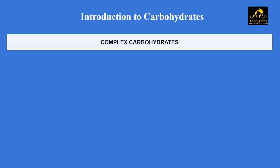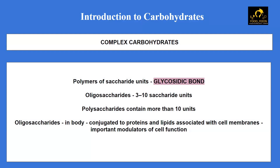What are complex carbohydrates? They are polymers of saccharide units — that is, sugar units — which are linked together by glycosidic bonds. Oligosaccharides contain 3 to 10 sugar units, and polysaccharides contain more than 10 sugar units. Usually the basic monosaccharide unit will be glucose in many cases, but the structure it forms will be different in different carbohydrates.